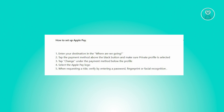The first thing that you want to do is enter your intended destination in the 'Where are you going?' section in the Uber mobile application. From there, click on the payment option located above the block button.